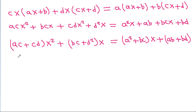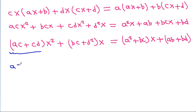On the left-hand side the coefficient of x² is ac + cd, and on the right-hand side the coefficient of x² is 0. That means ac + cd = 0.